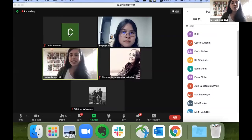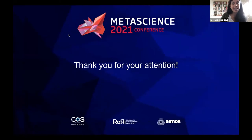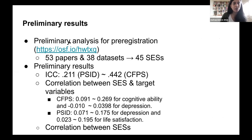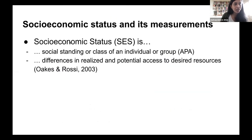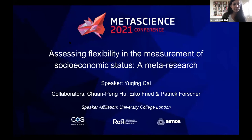Up next, we have Yuching Cai. Yuching is a Masters of Research student in Developmental Neuroscience and Psychopathology at UCL and Yale University. Yuching is presenting a talk titled Assessing Flexibility in the Measurement of Socioeconomic Status in Meta-Research. Over to you, Yuching.